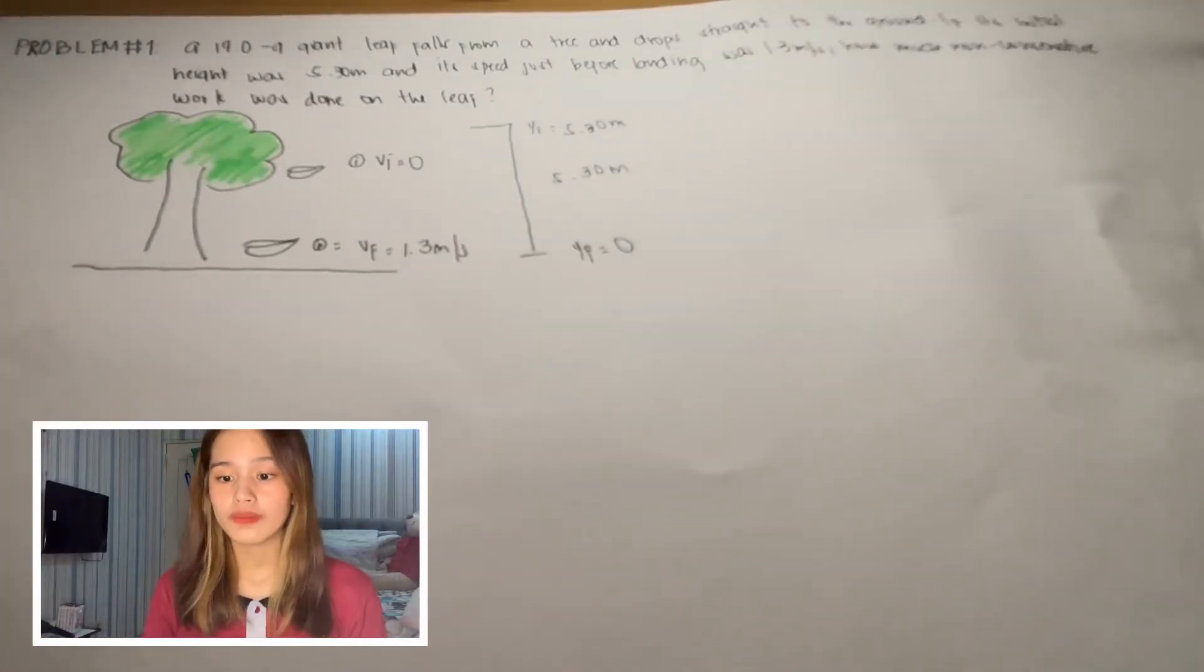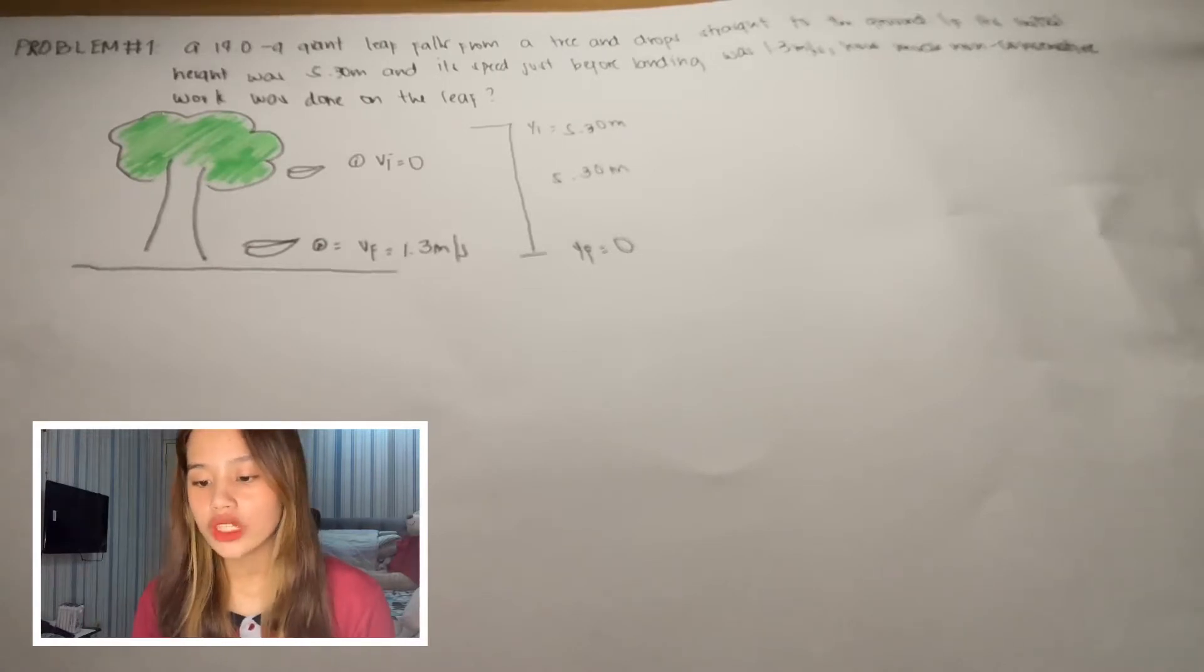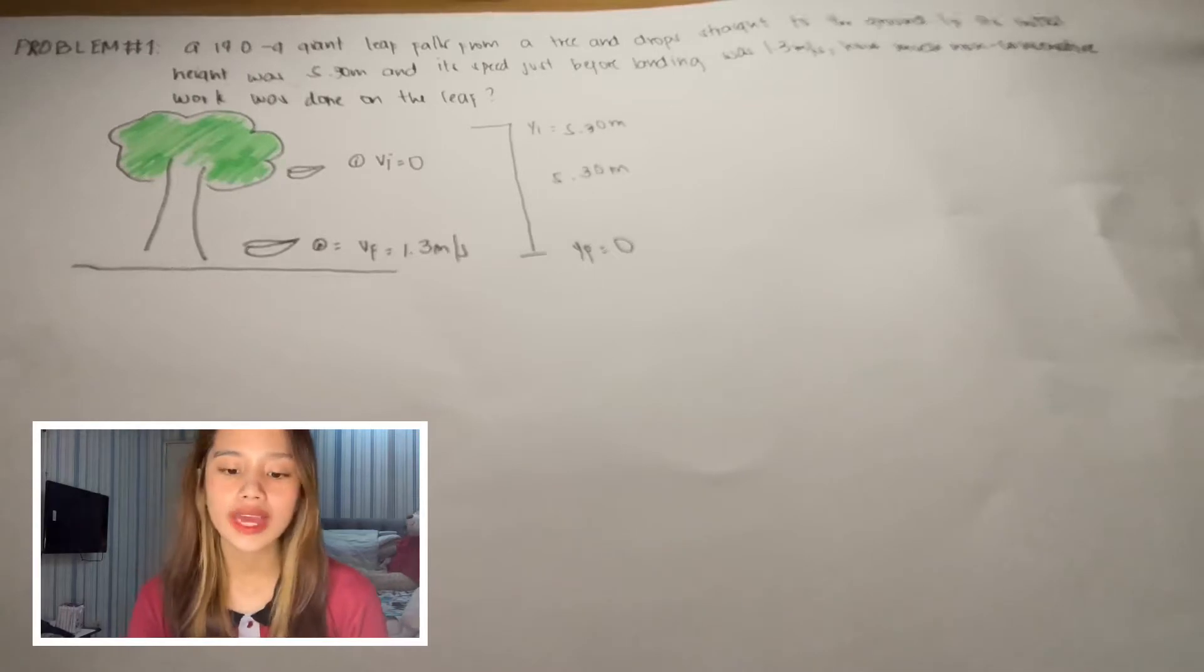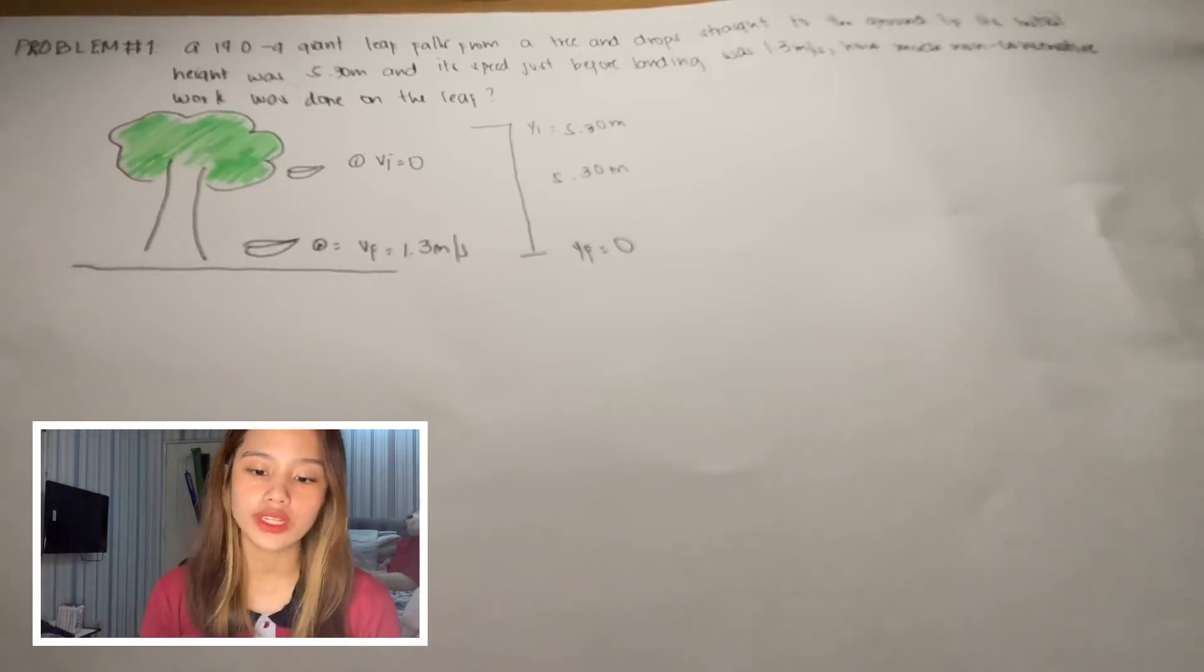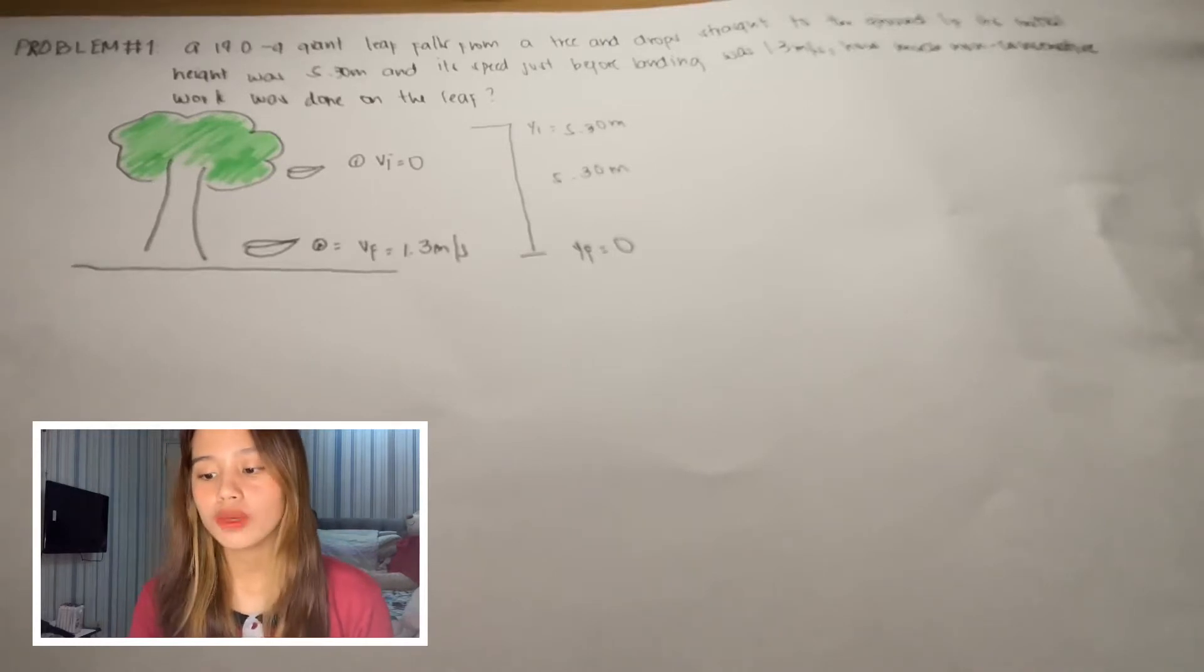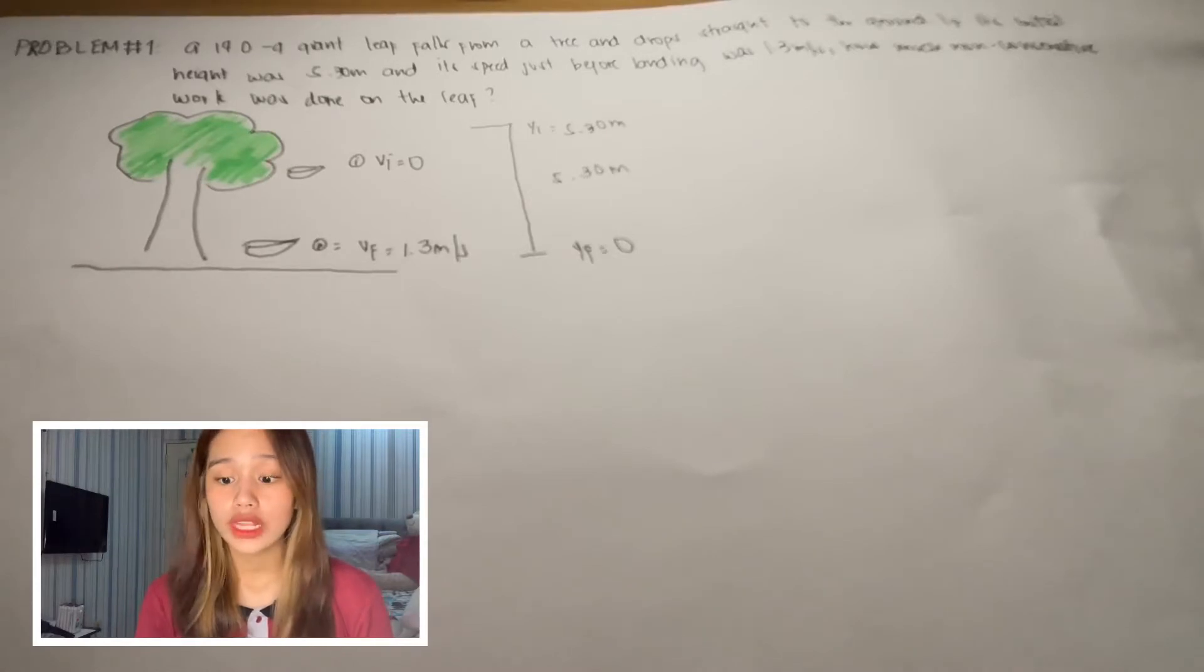So here's our problem. A 17 gram giant leaf falls from a tree and drops straight to the ground. If its initial height was 5.3 meters and its velocity before landing was 1.3 meters per second, how much non-conservative work was done on the leaf?